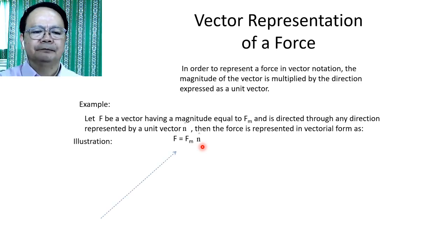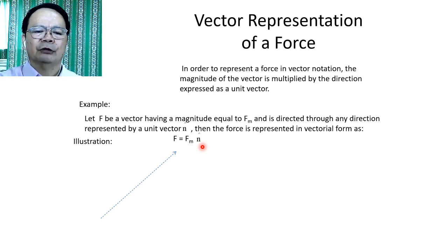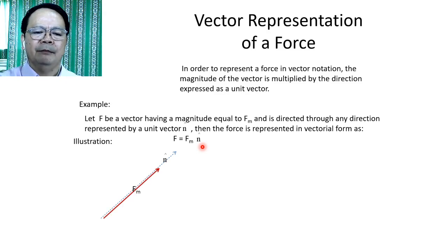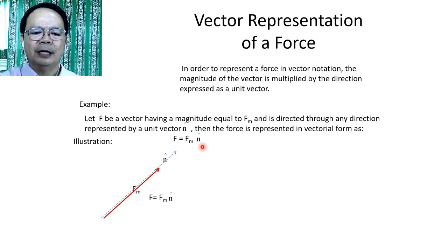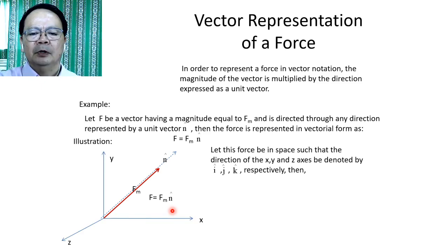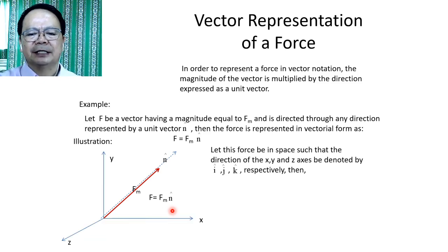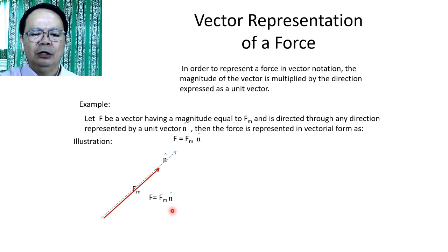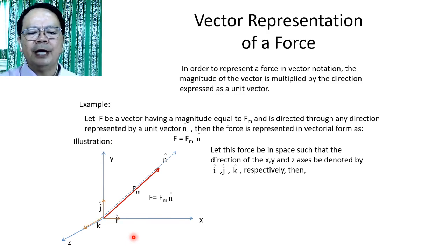Let us have this illustration. Let us imagine that this is the direction described by the unit vector N. On this direction, there is a vector having a magnitude of F sub m. Then the vector F is represented in vector form as the product of F sub m and that direction. Now let this force be in space such that the directions of X, Y, and Z are denoted by i, j, and k respectively.